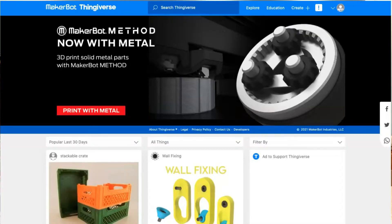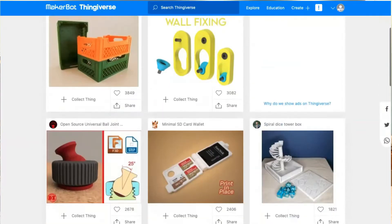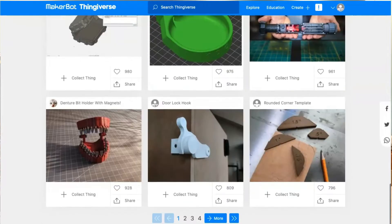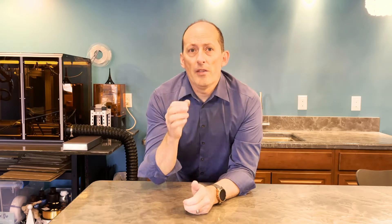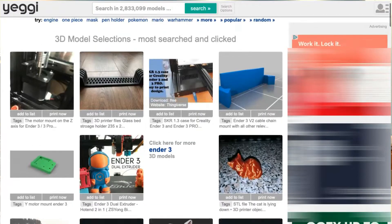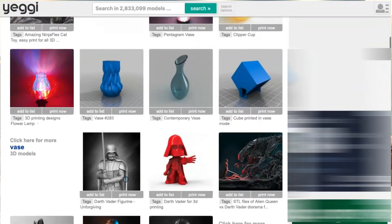Thingiverse is a repository of thousands and thousands and thousands of files that you can use for printing. Yeggi is different. It's not a repository. It's a search engine. It's the Google or Yahoo of 3D modeling. That's where you're going to go to search across all of the internet and find in the different resources and repositories the different models that are available to you.